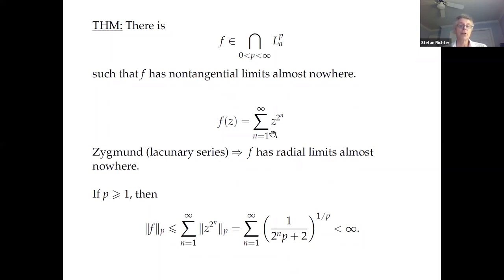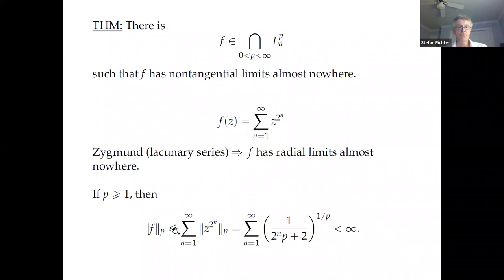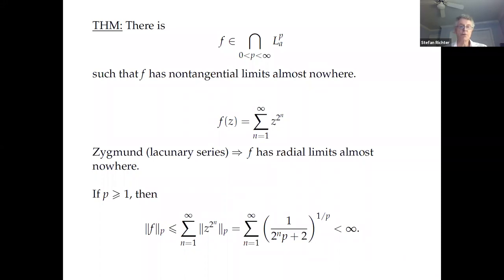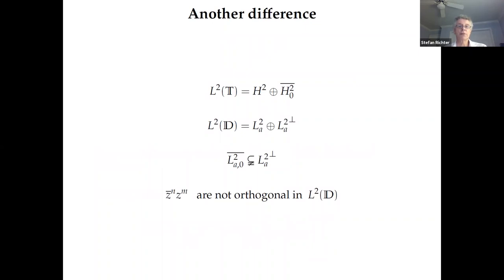On the other hand, the power series coefficients are all one so they are not square-summable. However, for the LpA norm, using the triangle inequality for p bigger than one and integrating over the disk, |z^k| is strictly less than one, and you can do the integral exactly. It turns out you can choose the 2^n powers so the sum is always finite no matter what. So there's your function that doesn't have radial limits anywhere but is in all Bergman spaces.